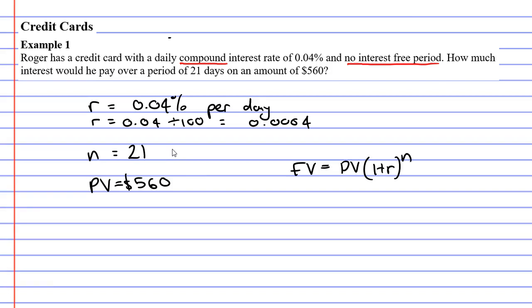Now our present value we know is $560, r is 0.0004, and n is 21.